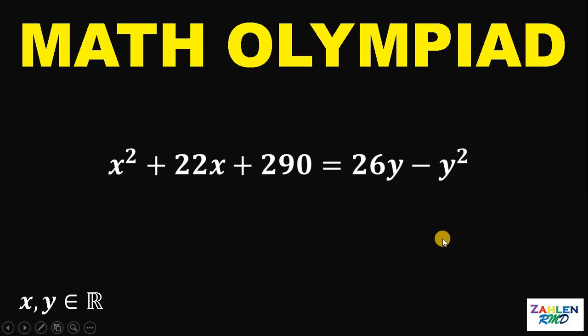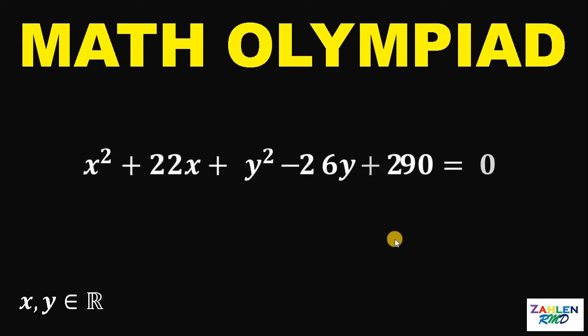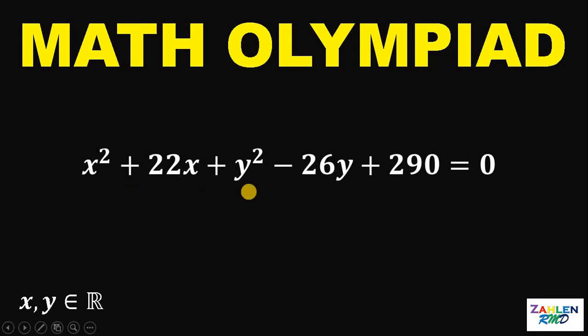Now, let's rearrange some terms and equate this to 0. So, we have x squared plus 22x plus y squared minus 26y plus 290 equals 0.